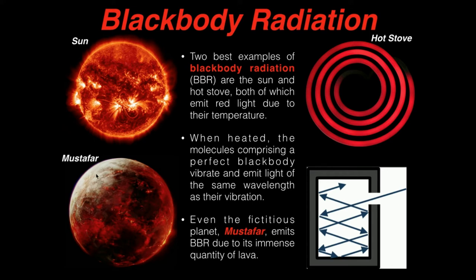Even the fictitious planet Mustafar from Star Wars Episode III, Revenge of the Sith, has a ton of lava on it. Lava is also very hot, and as a result of that, the lava itself emits blackbody radiation, which is why when you see the planet Mustafar in the movie, it actually appears red when you look at it from space.